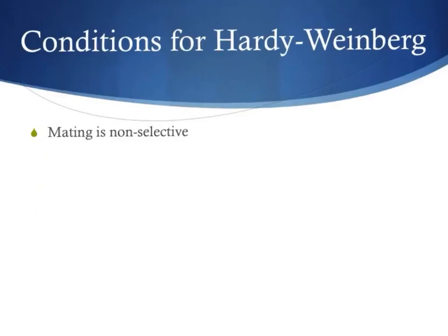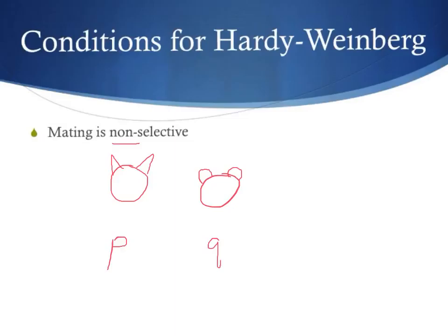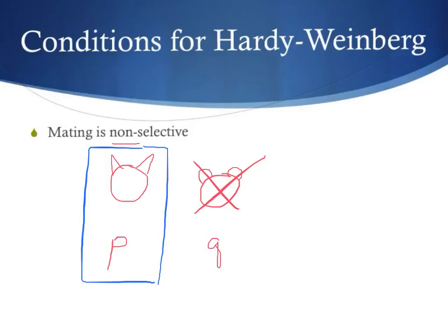The first criteria under which the Hardy-Weinberg principle applies is that mating is non-selective — meaning that all variations have equal chance of reproducing. So if I have one variation with pointy ears and another variation that has round ears, because each of these alleles are represented as P's and Q's, if the mating is selective and round ears is not preferred, then we will end up with only one allele surviving or having an advantage of surviving, and therefore throwing the equation off.